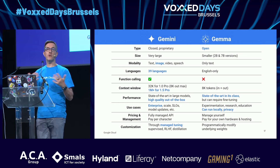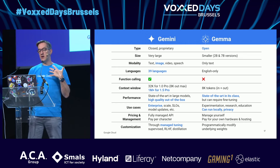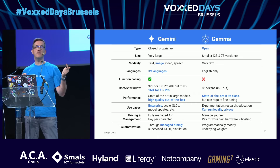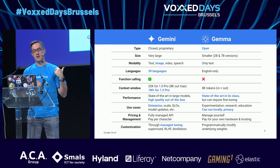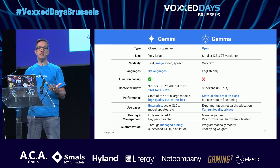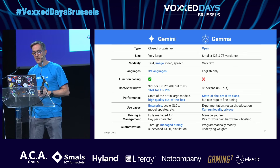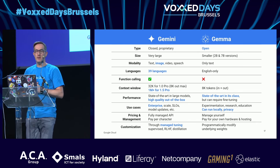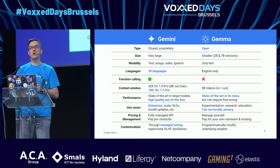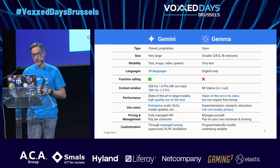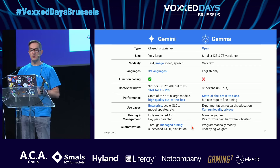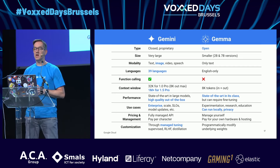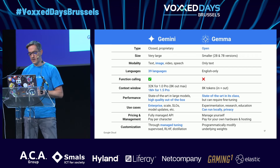When should you use one or the other? If you want something running locally for privacy or latency reasons, choose a small model. But bigger models support more languages — I tried Gemma with French and it works well, but probably not as good as English. Context windows are also smaller in Gemma. Weigh the pros and cons and decide, or maybe use a combination depending on your use case.